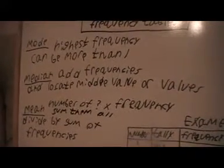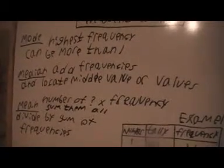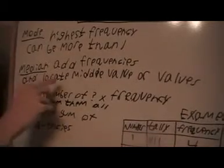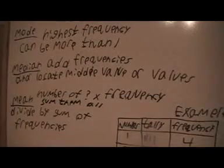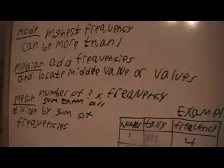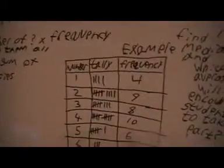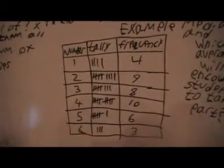Now for the median you can write a list of all your numbers but the best way to do it is to add all your frequencies and then locate the middle value or values. It saves time rather than writing out the whole list like four ones, nine twos, eight threes, ten fours etc. That would just waste a lot of time when you can simply add these up. Locate the middle one and we're done.